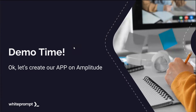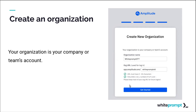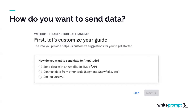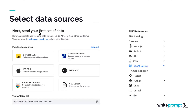To get started, you need to sign up. Amplitude will ask you for an organization URL and a name — it can be your company or team account. Then they ask how you are going to send the data: using tools like Segment or Snowflake connected directly via API, or directly with the Amplitude SDK. You select your data sources, and React Native is already supported. At the end you get an API key used to initialize the service.